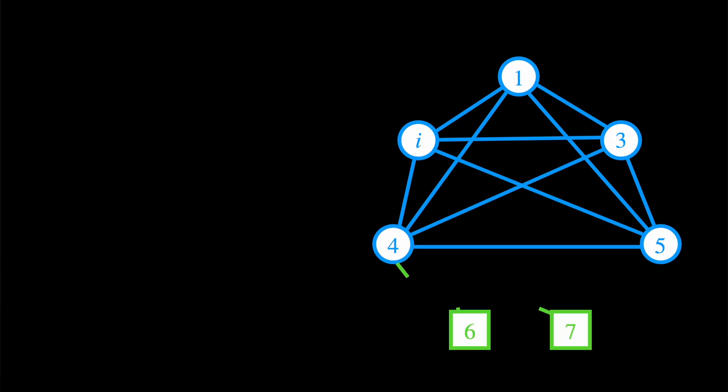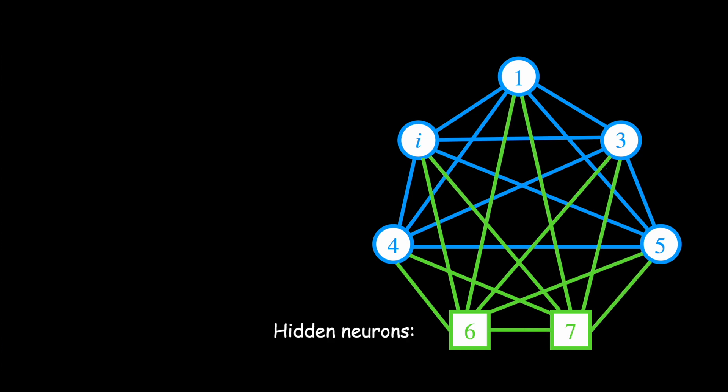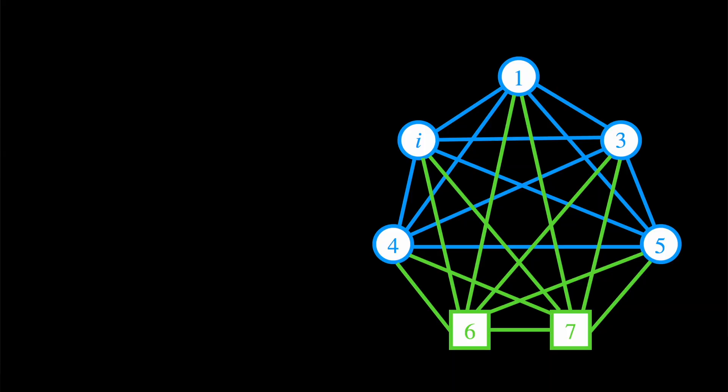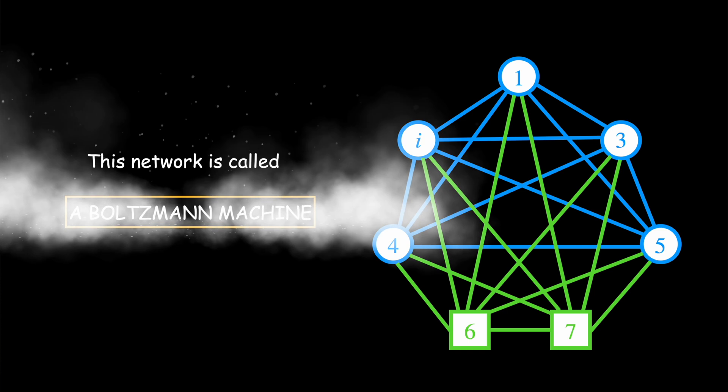But there is one more change. Hinton also added more neurons to the network called hidden neurons. Those hidden neurons capture the complex and intricate patterns in the observations. The neural network becomes much more complex and can more realistically try to solve the tasks that a human brain can. This network is called a Boltzmann machine.